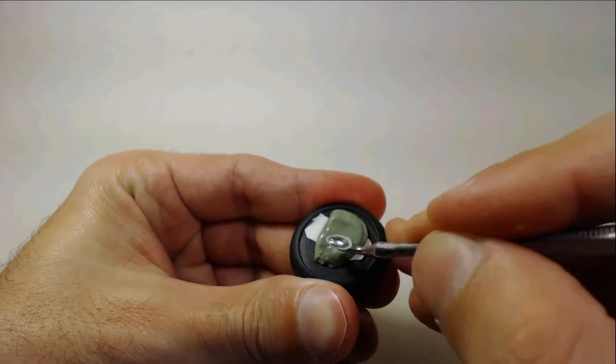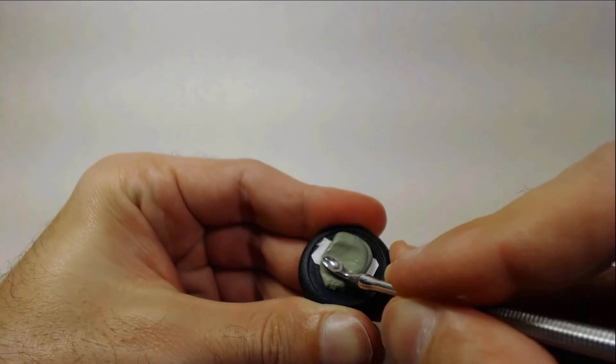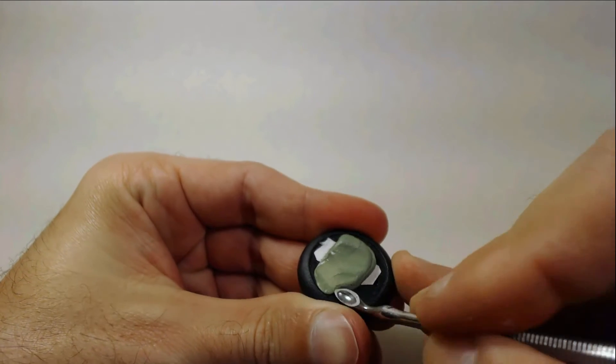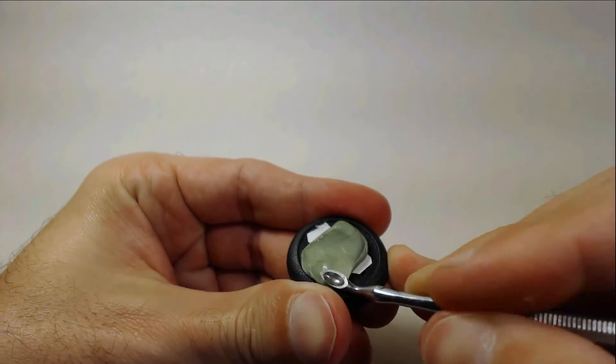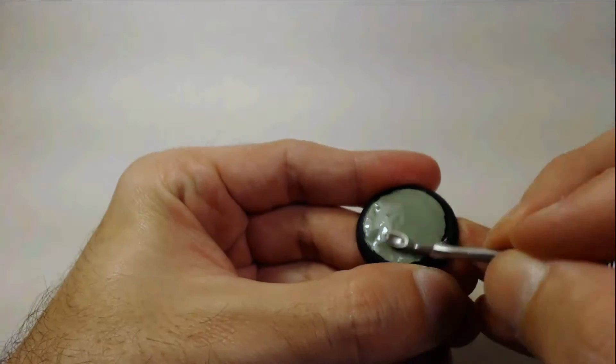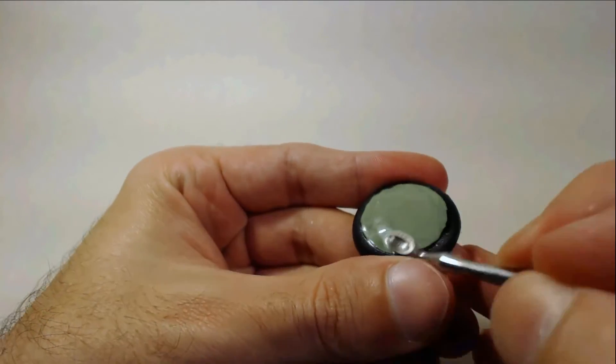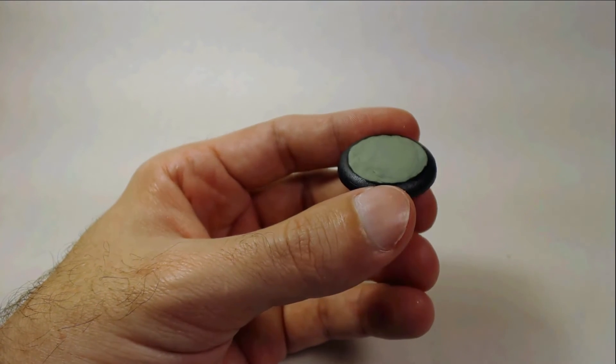Apply the green stuff over the base. I use a set of sculpting tools which I really recommend when working with green stuff. However, you can achieve similar results with a concave rounded surface. Something like a small spoon will work. Using a tool instead of your finger will ensure a smooth surface.